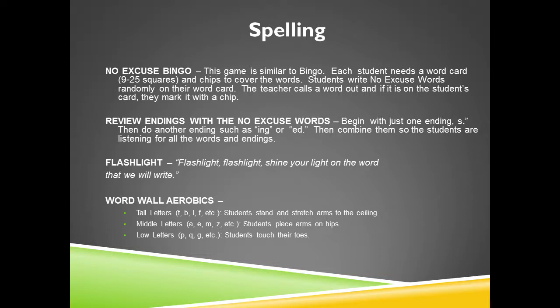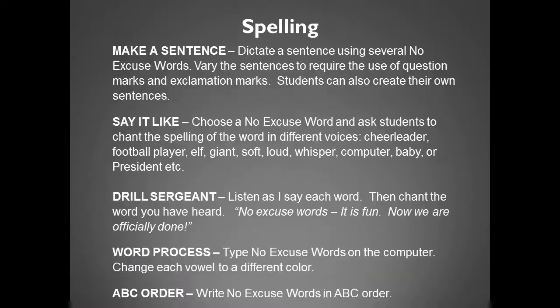Flashlight — shine your light on the word and we will write. Word Wall Aerobics — tall letters: students stand and stretch their arms to the ceiling; middle letters: students place their arms on hips; low letters: students touch their toes. Make a Sentence — dictate a sentence using several no-excuse words; vary the sentences to require the use of question marks and exclamation marks; students can also create their own sentences.